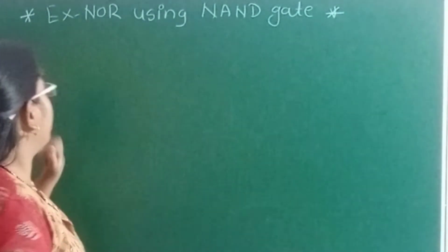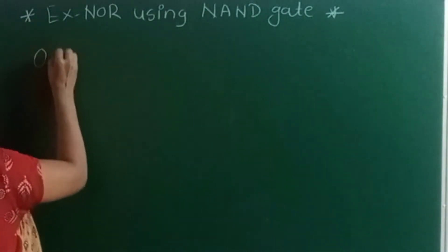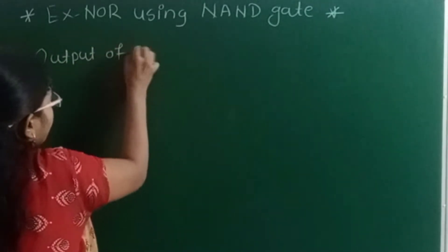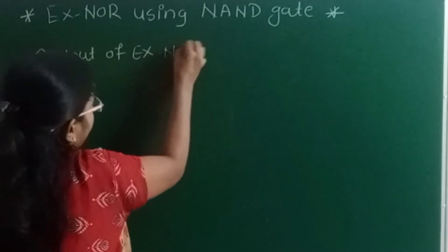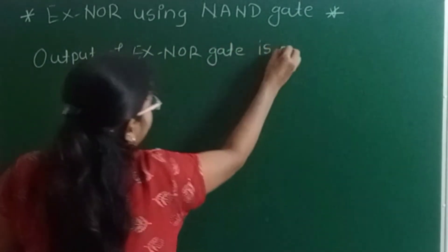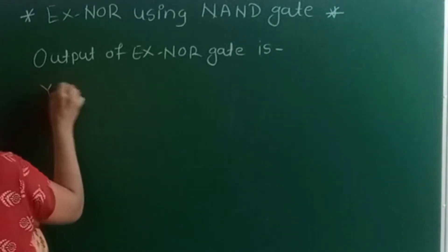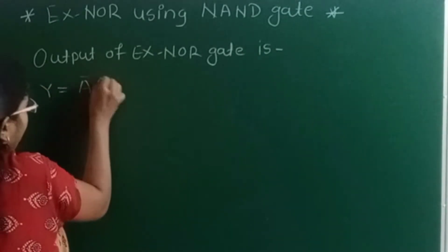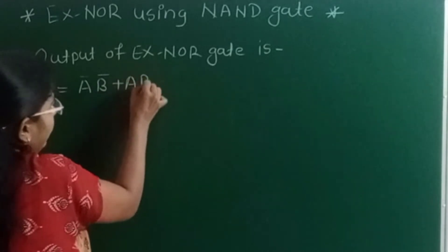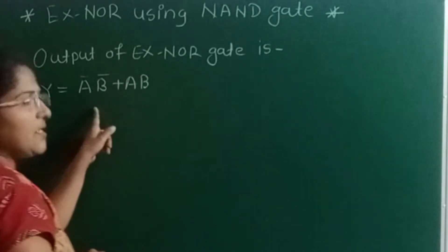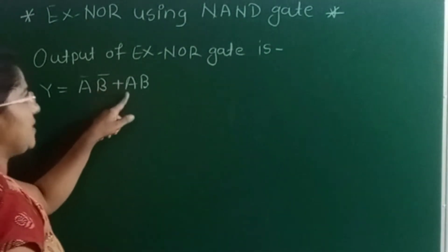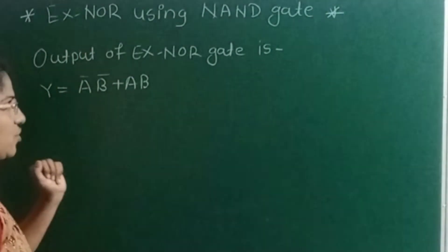The output of the XNOR gate is Y = A'B' + AB, or equivalently AB + A'B'. So Y = A'B' + AB is the output of the XNOR gate.